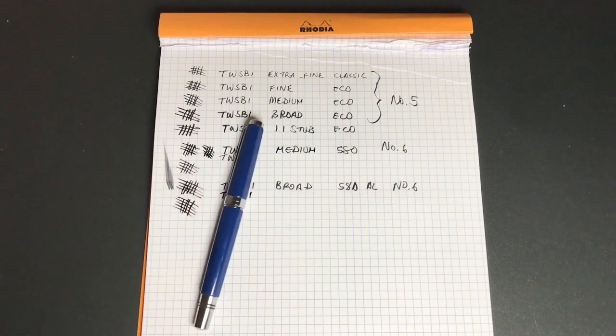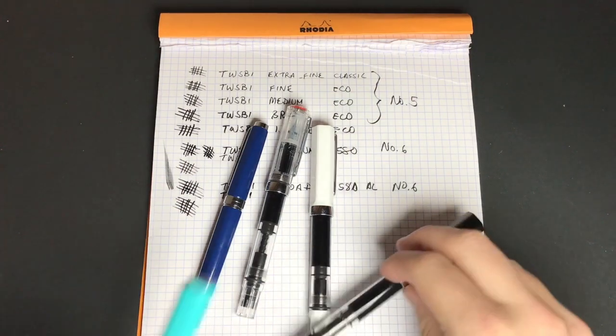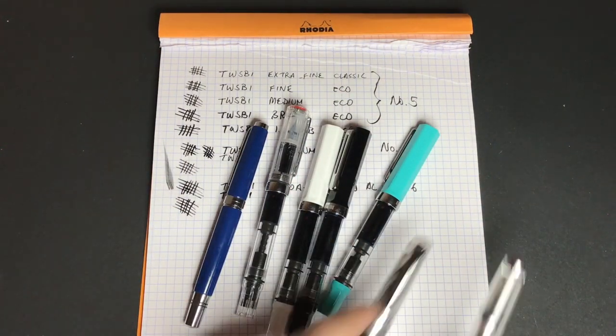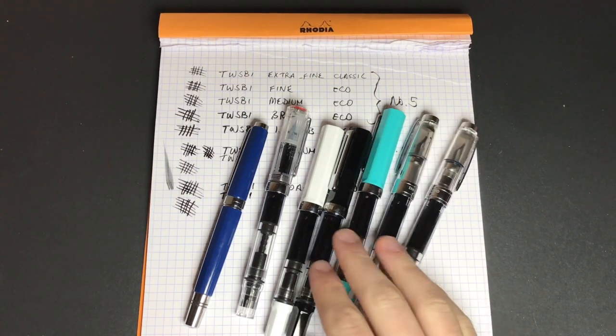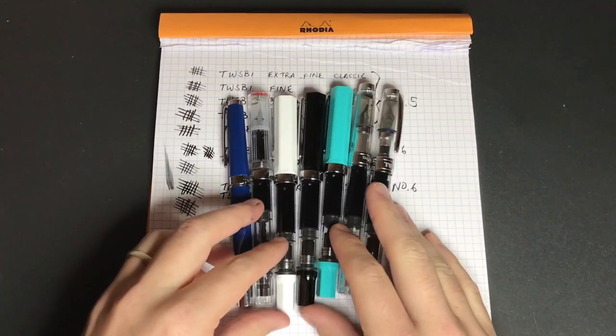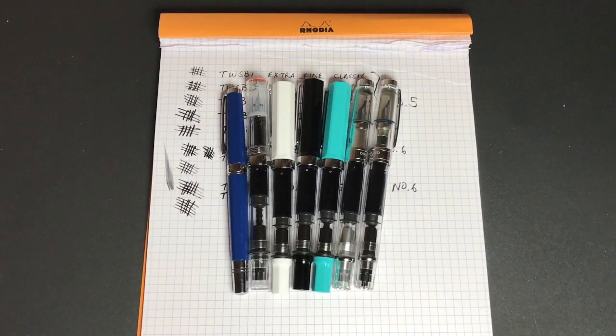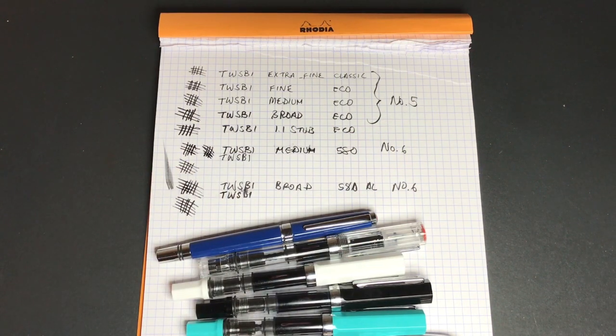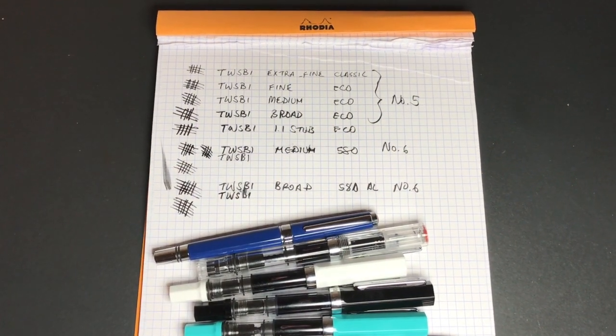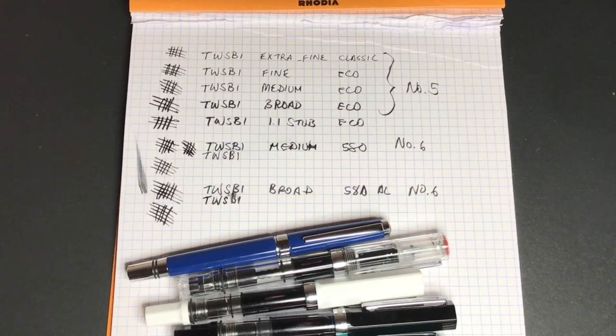So that was the TWSBI pens that I have, the number fives from extra fine through to 1.1, and then just a couple of the number sixes in my collection, the medium on the 580 and the broad on the 580 AL. These are wonderful nibs, great pens. I adore the TWSBI line. Looking forward to a couple of new additions from TWSBI coming out in the near future. And I hope this was useful and helpful just to see sort of what you do get with these different pens, nib varieties from TWSBI.